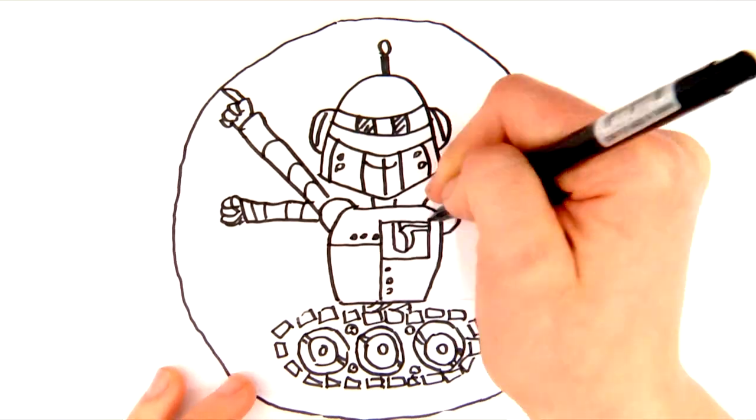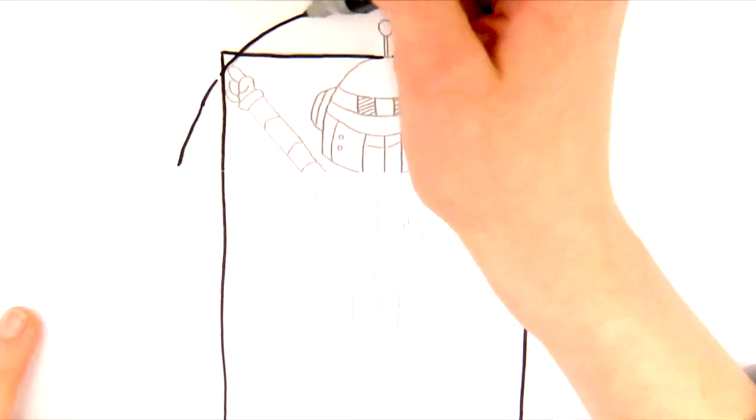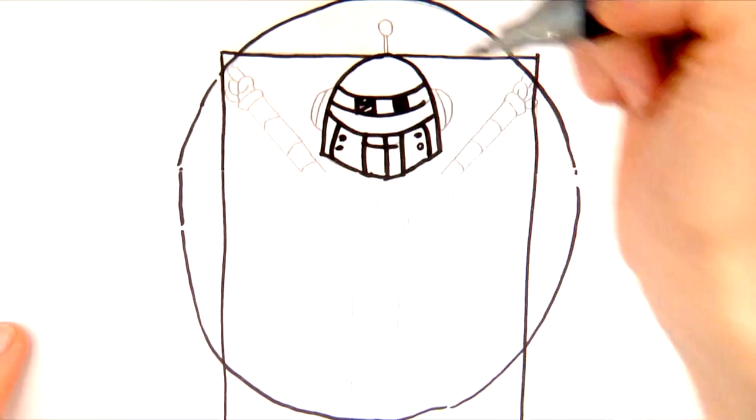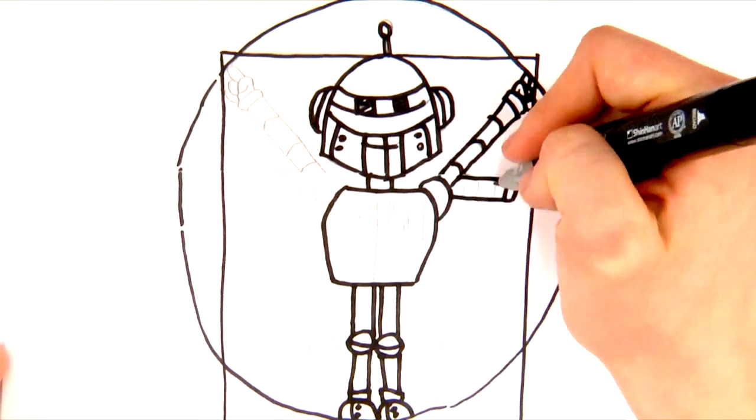For example, to figure out how far away an object is or how tightly to grasp it. Then, a robot must be able to act on that information with effectors: robot arms, legs, hands, or other ways of affecting the world around it.